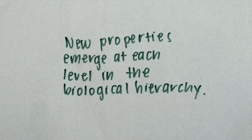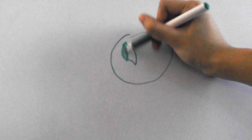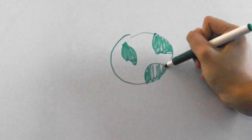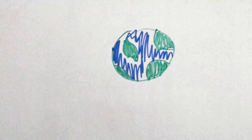So first up is the idea that new properties emerge at each level in the biological hierarchy. Just think about it, Earth is so huge that we need to divide it up into different levels so that we can take a closer look at biological organization.